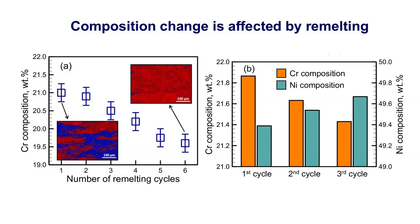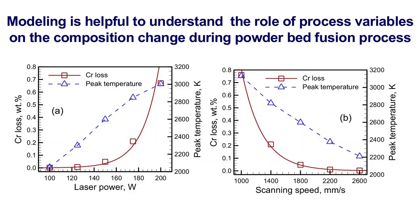For example, in a customized nickel alloy part produced by powder bed fusion with a powder containing 21.28% chromium, the chromium content decreases in areas subjected to more re-melting cycles. This research highlights the importance of understanding how selective vaporization affects composition changes during laser powder bed fusion of nickel-based superalloys. The newly developed modeling framework provides valuable insights into optimizing processing conditions such as laser power and scanning speed, by minimizing evaporative losses through careful control of temperature fields and re-melting cycles. Ultimately, this work aims to enhance the quality and performance of components produced via additive manufacturing techniques like laser powder bed fusion by ensuring desired chemical compositions are maintained throughout the process.